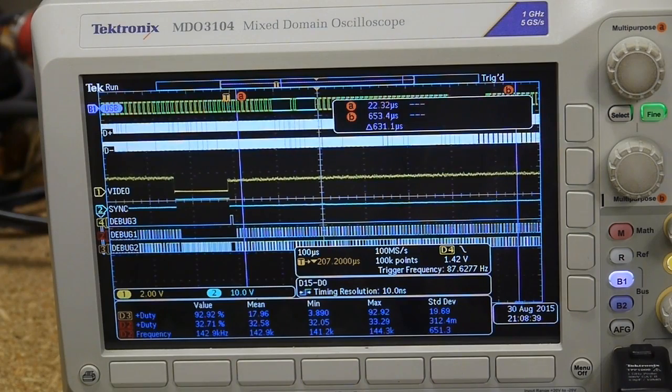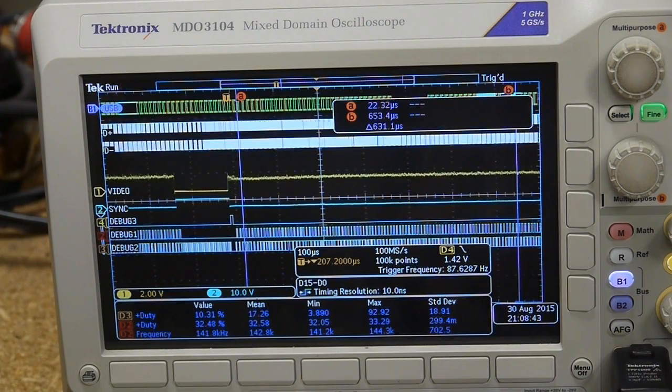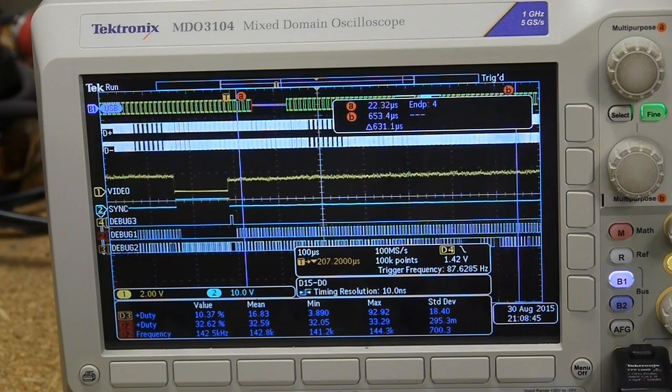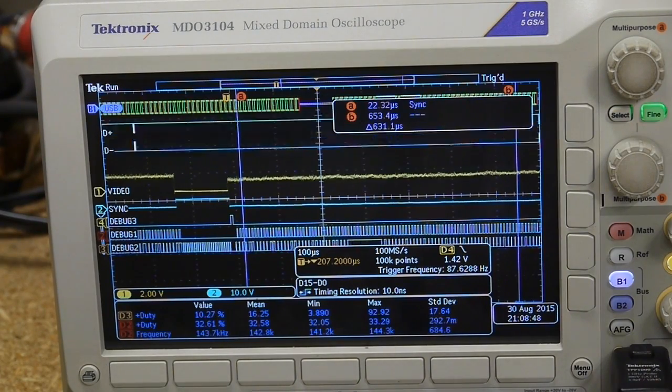As you can see, debug one has a duty cycle of about 32 percent, which means that the processor is spending 32% of its time in the analog-to-digital converter interrupt service routine. That's kind of high—that's a lot of time.